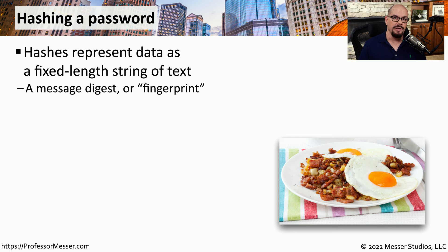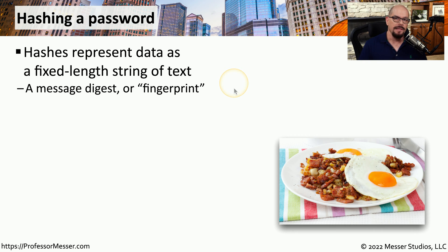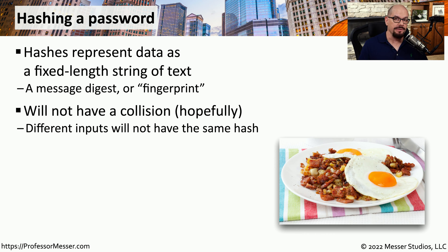So how should you store a password? One very common way is to store it as a hash. A hash is a cryptographic method that takes an input of information, like a password, and creates a fixed-length string of text. We refer to this text as a message digest or a fingerprint. We call it a fingerprint because each type of input into the hashing function has a completely separate and different output than any other input. Like a fingerprint, your password creates a very unique hash, and no other type of input should make exactly that same hash.